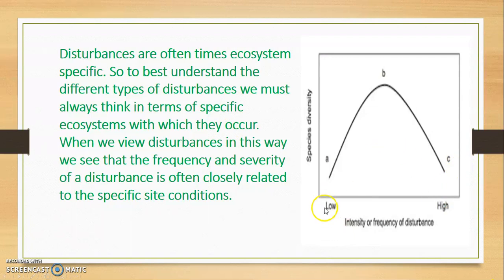In this graph you can easily see, on x-axis this is the low intensity of disturbance. When there is low intensity of disturbance, the species diversity will also be less. You can see species diversity on y-axis. Here is less diversity and here is less intensity of disturbance.